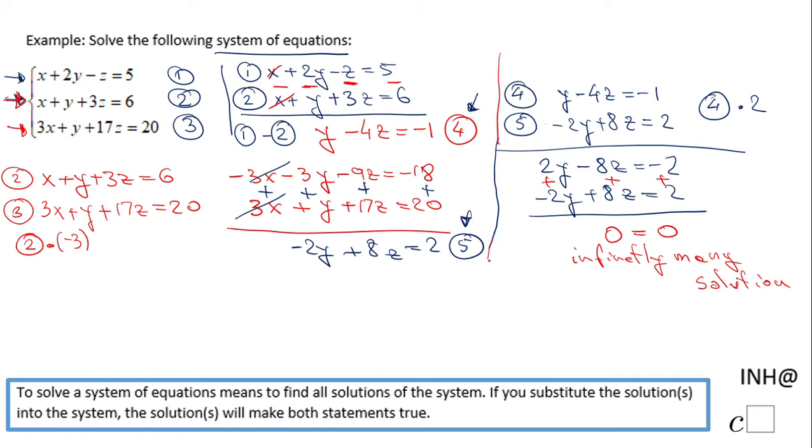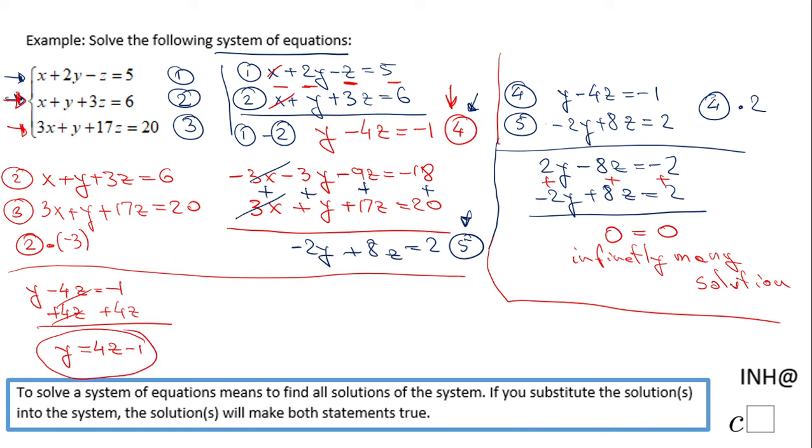So that means this system of equations has infinitely many solutions. How do we find these solutions? We're going to have to take, for example, equation number four: y - 4z = -1, and we're going to solve for y, just adding 4z on both sides. We have y = 4z - 1.